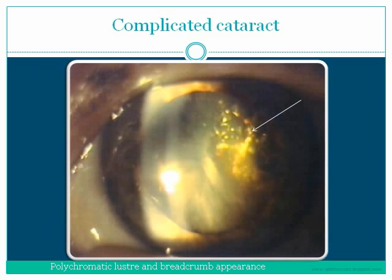This is a photo of a complicated cataract. Note the polychromatic luster and the breadcrumb appearance seen mainly in the posterior subcapsular area, detected by slit lamp. Cataract is one of the more common complications of uveitis which results in visual loss.